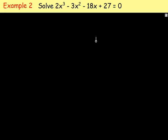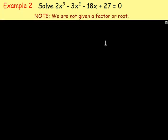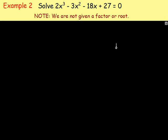Let's try example number 2: solve 2x cubed minus 3x squared minus 18x plus 27 equals zero. With this, we aren't given a factor — we're not told x plus 7 is a factor, or x minus 2 is a factor. We're also not told any of the roots. So what do you do? All you need to do is pick some values of x. Start with 1, go for negative 1, 2, negative 2, 3, negative 3. Sub them in and you're wanting to see what will give you zero.